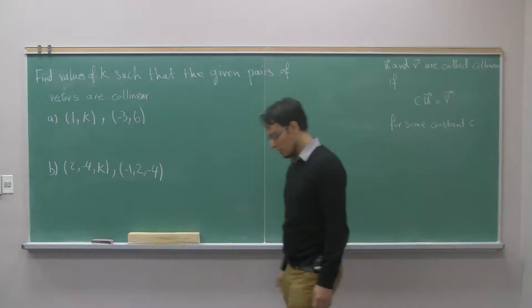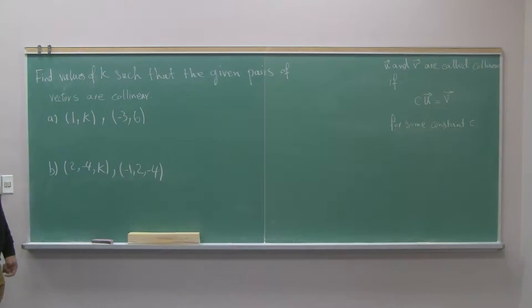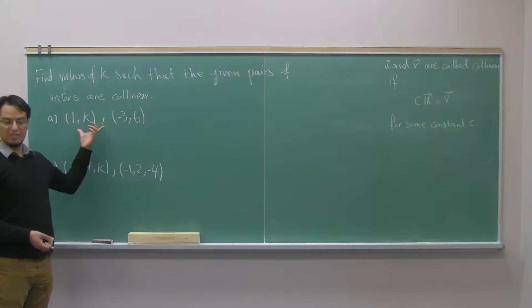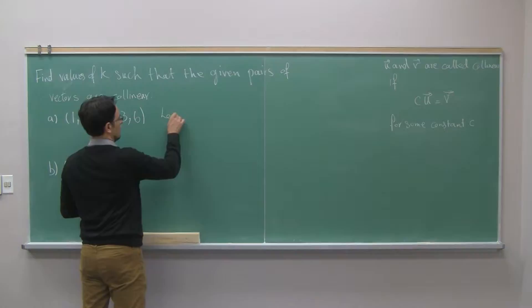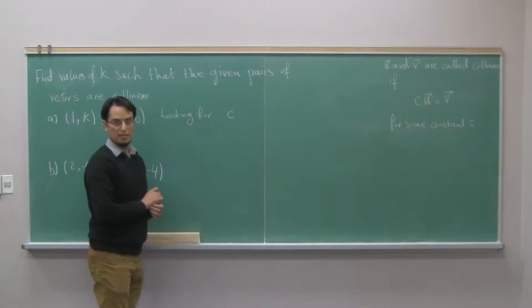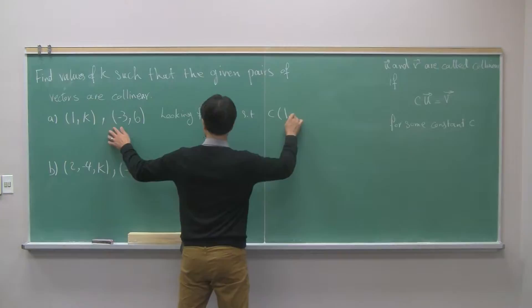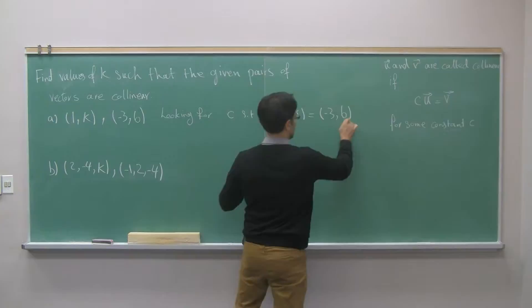Let's try to apply that theory here. I'm supposed to find values for k such that this vector is collinear to this vector. Basically, I'm looking for some number c such that if I multiply c to the first vector, I get the second vector. Well, I know what is a scalar multiplication.